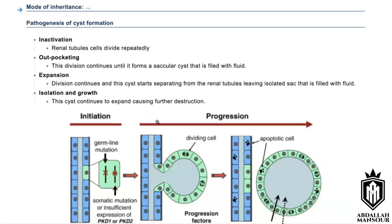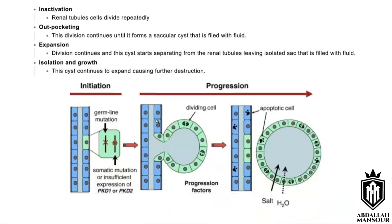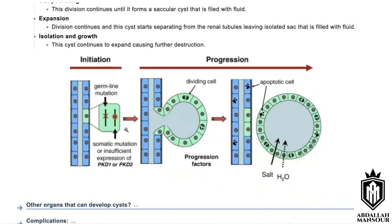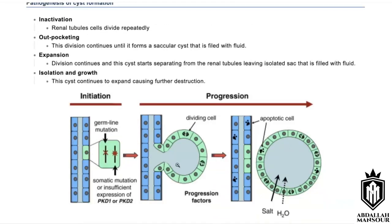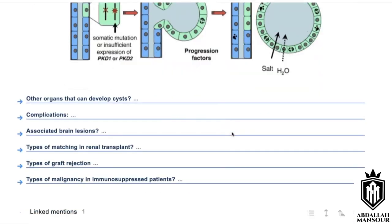The cells continue to expand, causing further destruction of the kidney parenchyma. In the diagram: inactivation by the gene leads to progression, forming a saccule — the outpocketing. Then fluid accumulation causes expansion into a proper cyst, followed by separation, continued growth, and compression.